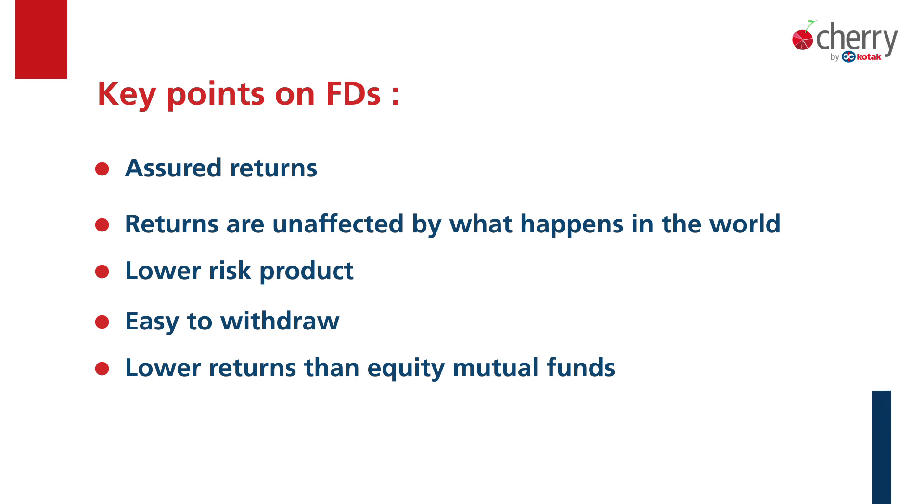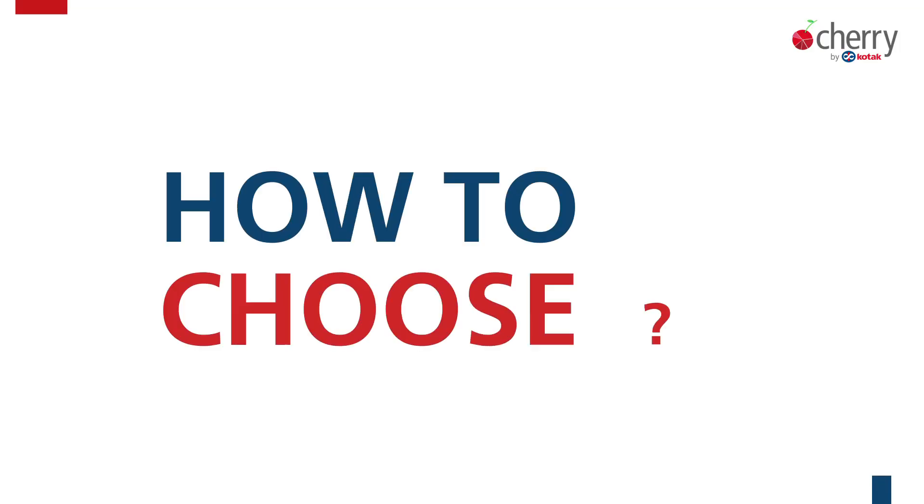The biggest disadvantage of fixed deposit is ki return assured toh hota hai, but over a longer period of time its returns will be lower than equity mutual fund. So you have to balance your portfolio and choose — at which point in time, which product is better for you. As a thumb rule, whatever you need for the near term — let's say you need money for 6 months, 1-2 years — and that is for a fixed purpose.